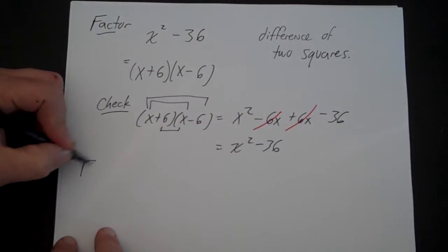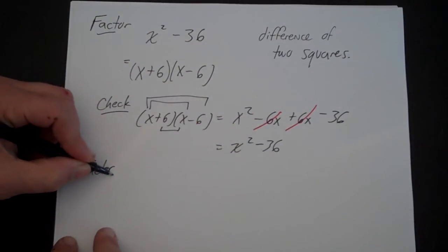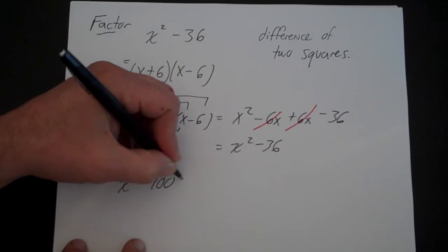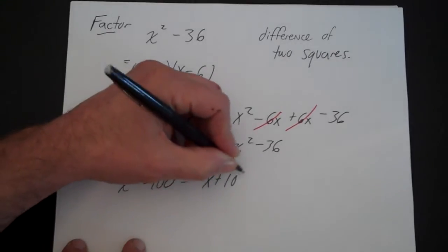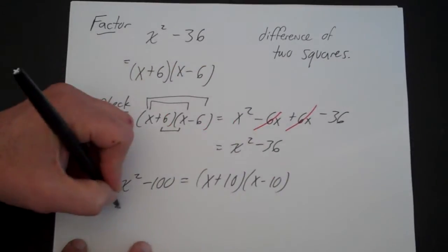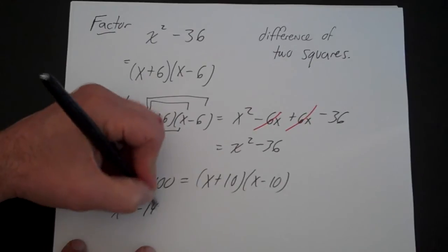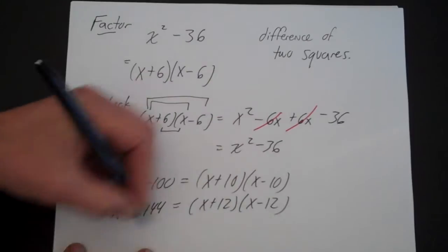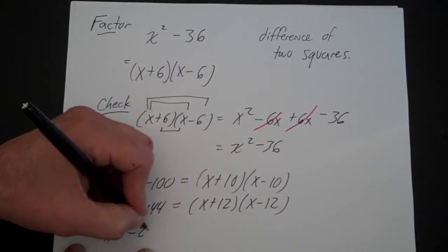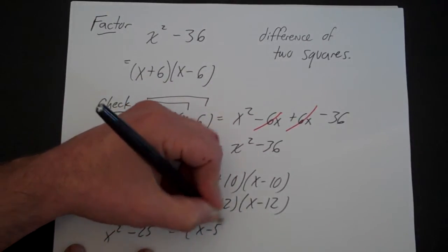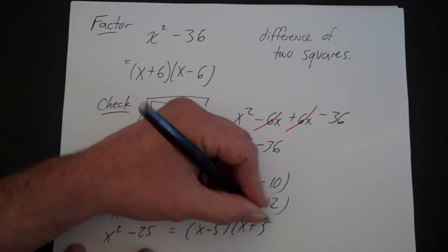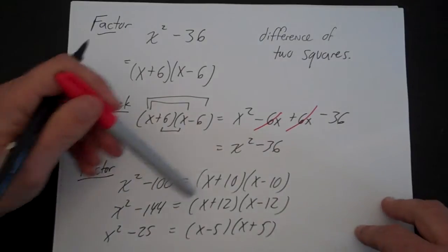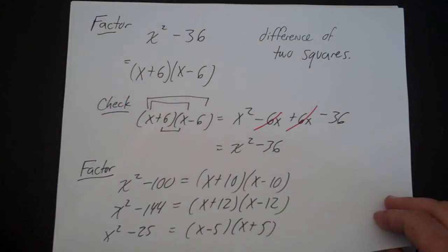Once you recognize that pattern, you can very easily factor a number of binomials. x squared minus 100 gives x plus 10, x minus 10. x squared minus 144 gives x plus 12, x minus 12. x squared minus 25 gives x minus 5, x plus 5. The order doesn't matter — the key is that you have a perfect square and a perfect square with a negative in between: the difference of two squares, giving one plus and one minus.